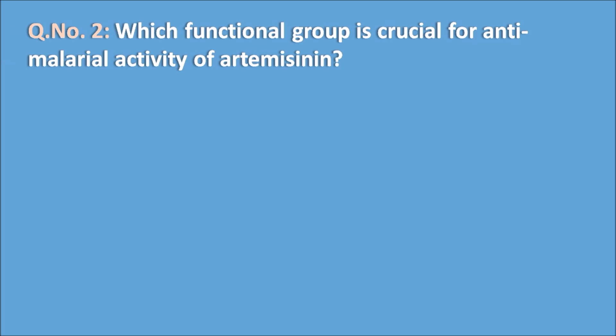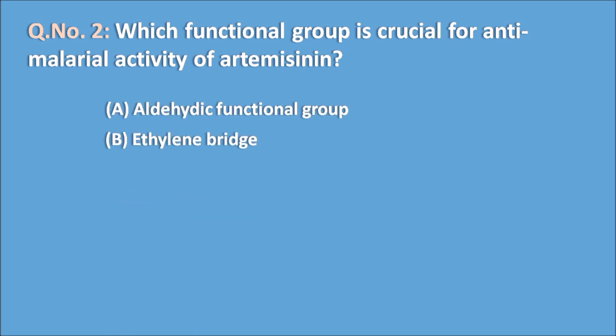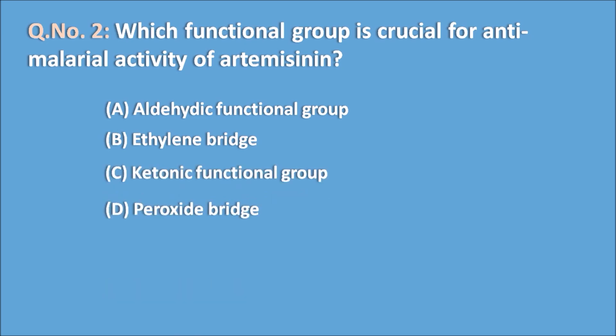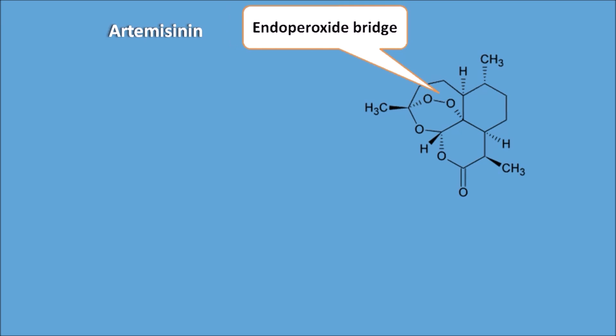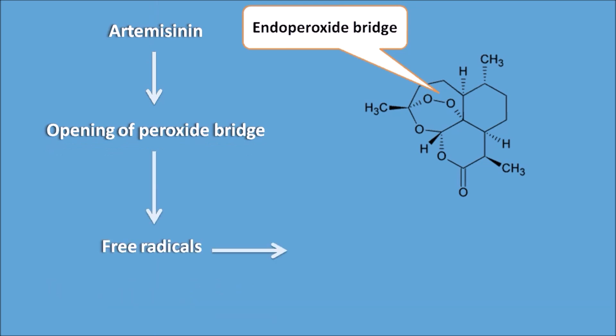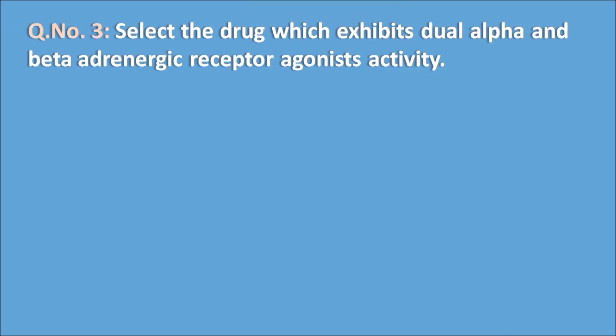Second question: which functional group is crucial for the antimalarial activity of artemisinin? Options are A. aldehydic functional group, B. ethylene bridge, C. ketonic functional group, and D. peroxide bridge. The answer is the peroxide bridge. Artemisinin has an endoperoxide bridge in its structure, which is essential for antimalarial activity. Artemisinin undergoes opening of the peroxide bridge, generating free radicals that are toxic to the parasite.